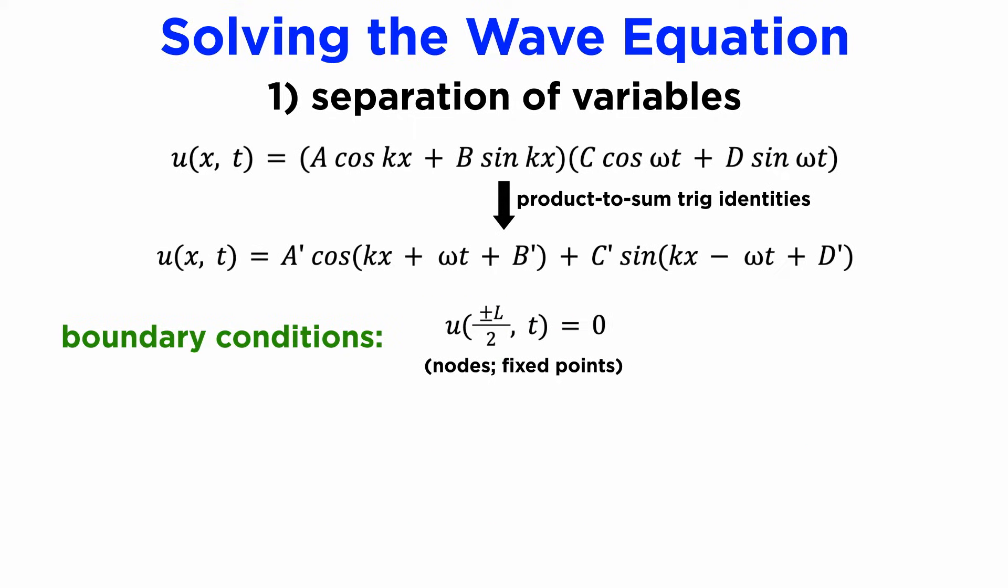If our boundary conditions are such that the wave is constrained to have nodes at fixed points, such as the ends of a vibrating string, then we could identify the allowable frequencies, which are known as normal modes in the context of vibrations, and sum over those as shown here.